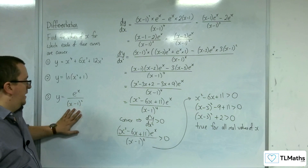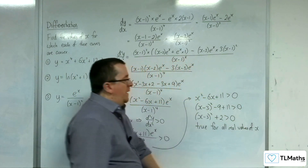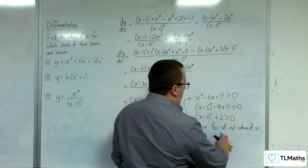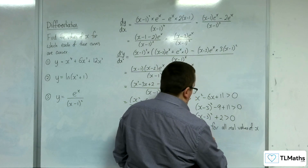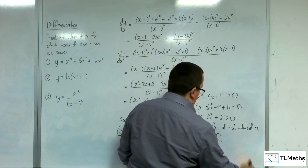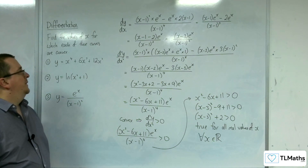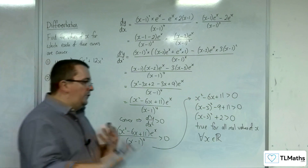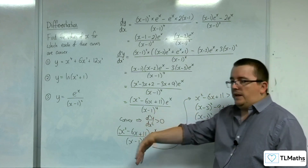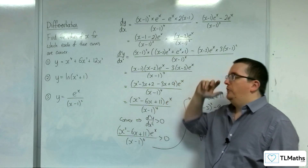This curve is convex for all real values of x. If you want to use university-level notation, 'for all' is written as an upside-down A, for all x belonging to the real numbers. So that is a mix and medley of differentiation skills, some of which is beyond where we currently are in the playlist, so you would have to look ahead to see where these skills come from and then come back and have a go at these problems.